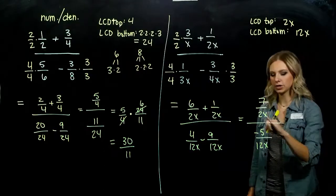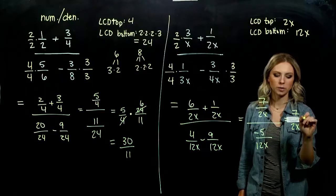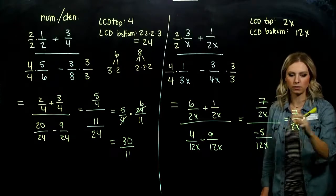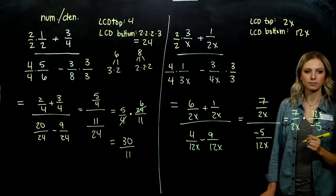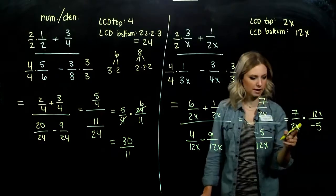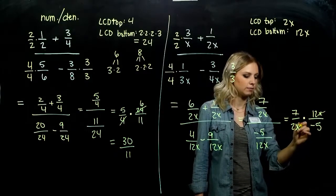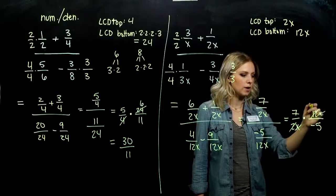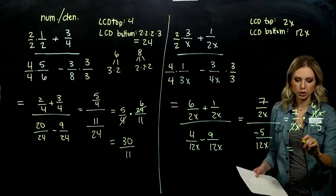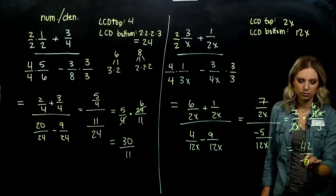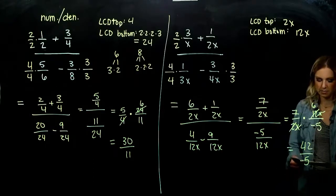Combining those, up top I have 7 over 2X, and down below 9 minus 4 gives us negative 5 over 12X. When we have a fraction divided by a fraction, keep the top and multiply by the reciprocal of the bottom — flipping it upside down. We can simplify: X up top and X down below cancel, and 2 goes into 12 six times. We're left with 42 up top and negative 5 down below. Same answer as before, but with a different method.